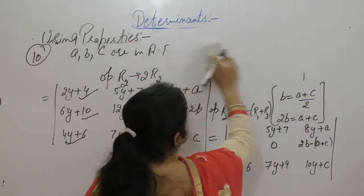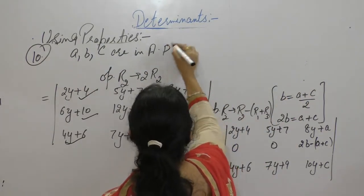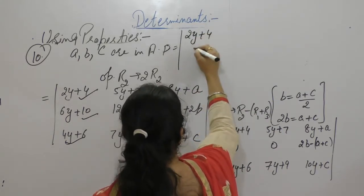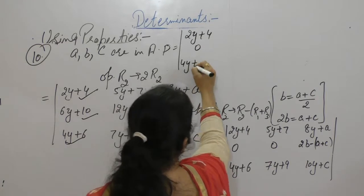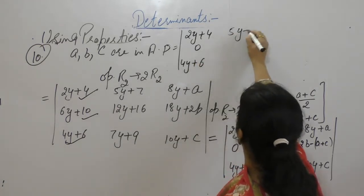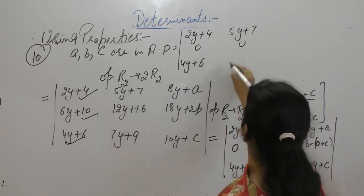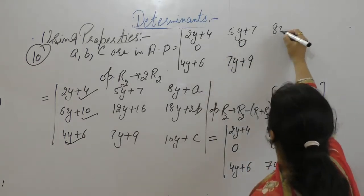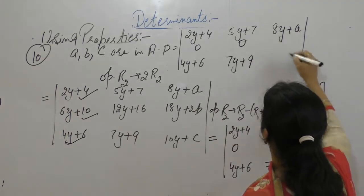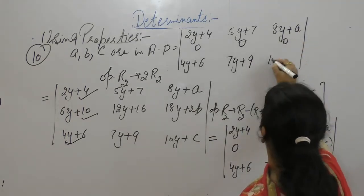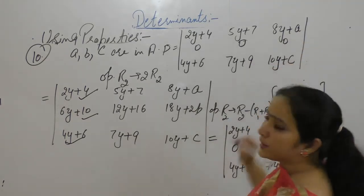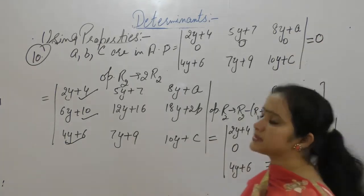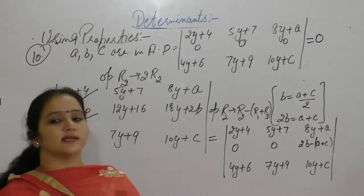So the matrix becomes: 2Y plus 4, 0, 4Y plus 6, then 5Y plus 7, 0, 7Y plus 9, then 8Y plus A, 0, 10Y plus C. Since the second row has element 0 throughout, the determinant of this is 0.